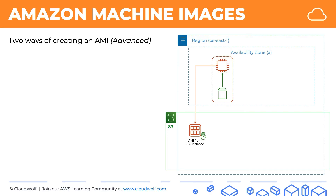The second approach is to take the EBS volume, create an EBS snapshot, and then create the AMI from the EBS snapshot. The EBS snapshot will have everything we need — the operating system, the data, the state of the instance — and therefore these two approaches are identical. There are some minor differences, but they're out of the scope for this course.